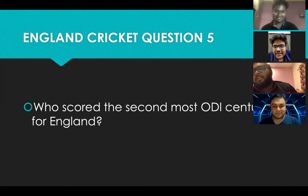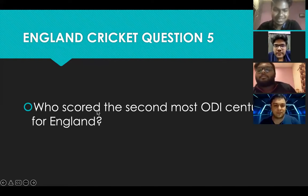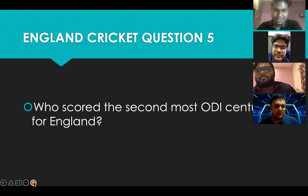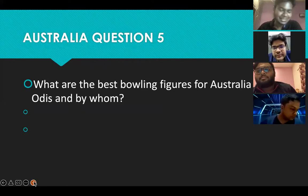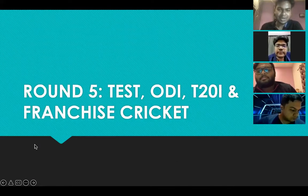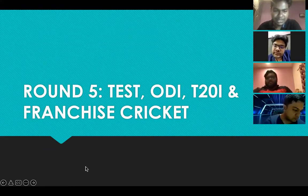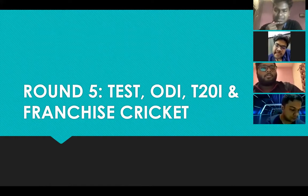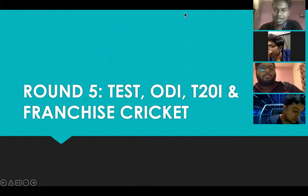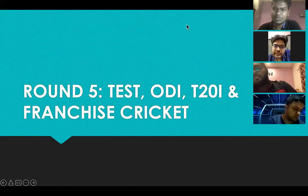40 points this round — scores are 91 and 94. Sanjay is leading by three points. Let's go to the last round. Both of you have been doing well and this round offers the most points — Test, ODI, T20 and franchise cricket. If you get it right, plus 10; if you pass and the opponent answers, they also get plus 10, otherwise zero. Sanjay wins the coin toss and chooses to go second.